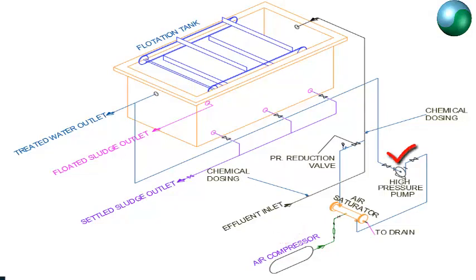High pressure pump is required of around 6.5 kg per cm square. In smaller units, 100% of effluent can be recycled, and in bigger units 15 to 120% of effluent is recycled depending upon the nature of effluent.